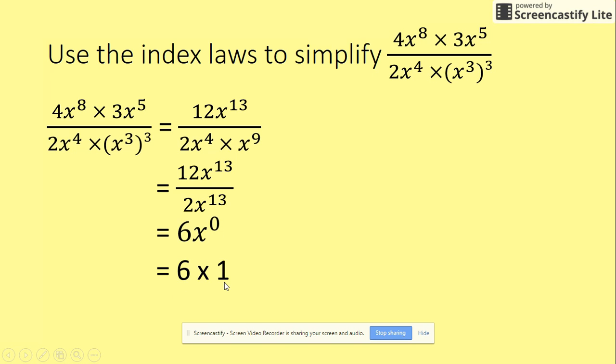because the x is to the power of 0, that becomes 1. So we're actually going to go 6 times 1, and our answer then is obviously 6. So 6 to the power of 0 on its own would be 1, but 6x to the power of 0 means that x becomes 1, and 6 times 1 is 6. Go ahead and try some of these.